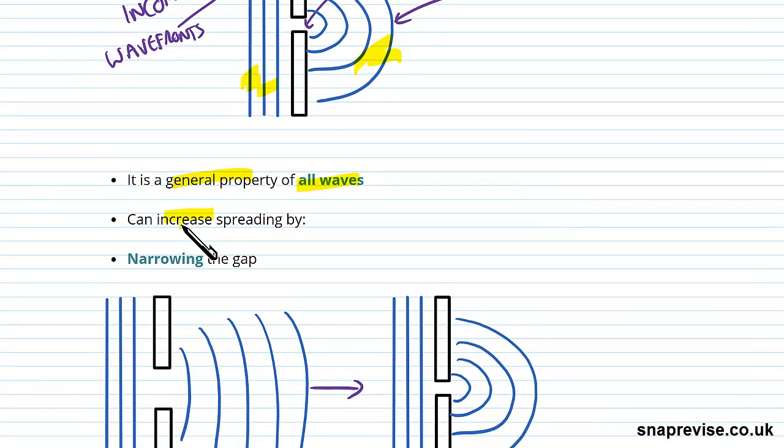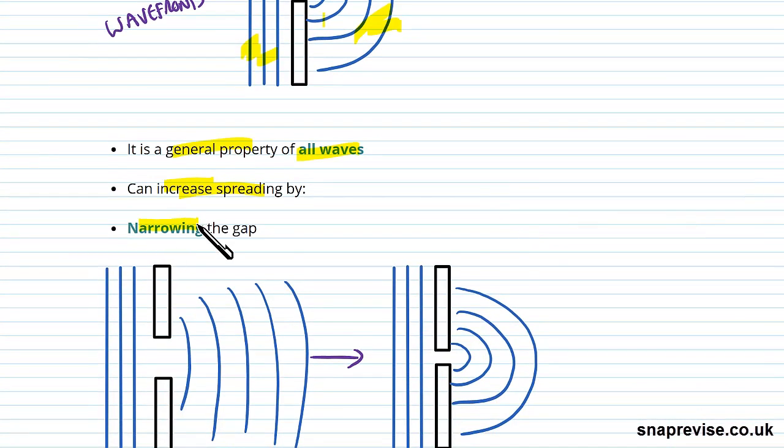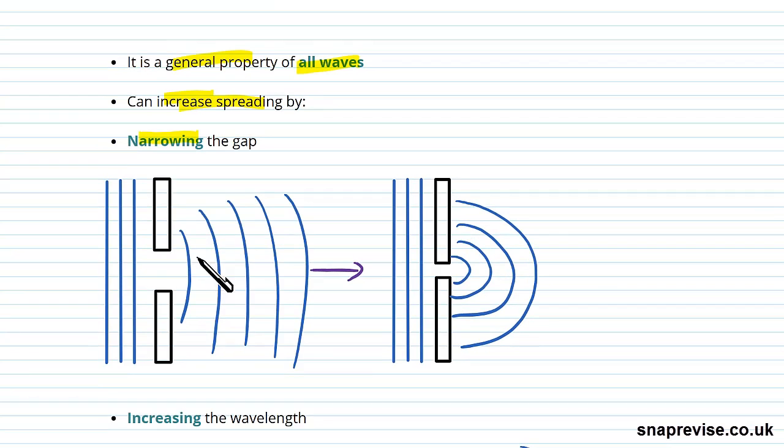So how can we increase the spreading? That is to say, how can we make the spreading more like these concentric circles we're seeing? So we can do that by narrowing the gap, as seen below. So this is one example where we've got a wider gap.